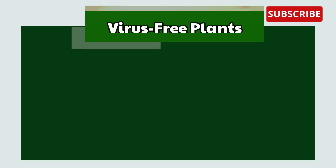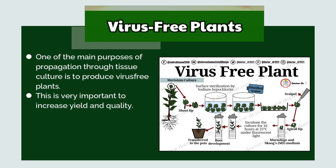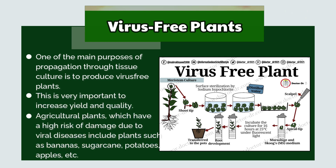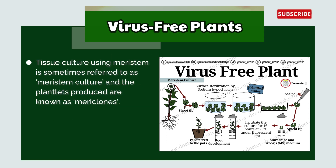Virus-free plants: One of the main purposes of propagation through tissue culture is to produce virus-free plants. This is very important to increase yield and quality. Plants with high risk of damage due to viral diseases include bananas, sugarcane, potatoes, apples, etc. Since meristems such as apical or auxiliary meristems are free from viral infections, these tissues can be used as explants for mass multiplication to get large numbers of virus-free plants. Tissue culture using meristem is sometimes referred to as meristem culture, and the plantlets produced are known as mericlones.